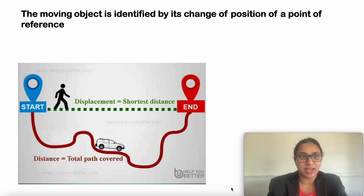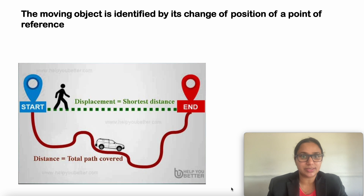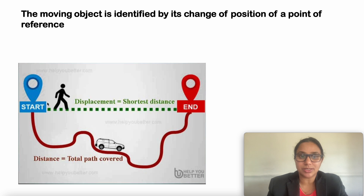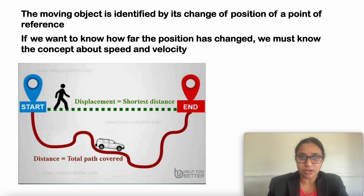In the previous class we learnt about the difference between displacement and distance travelled. A moving object is identified by its change of position from a point of reference. From the starting point to the ending point, displacement is the shortest distance covered by an object, but distance is the total path covered. So if we want to know how far the position has changed, we must use the concept of speed and velocity.